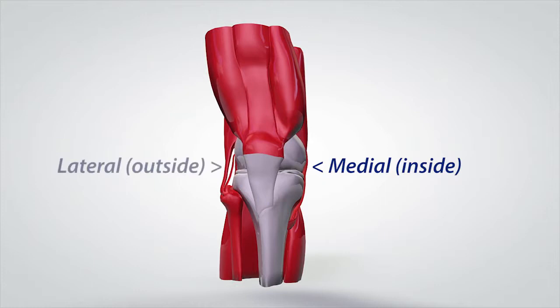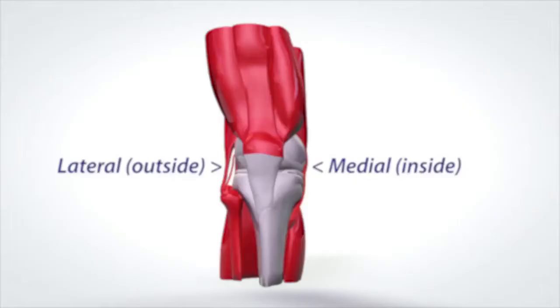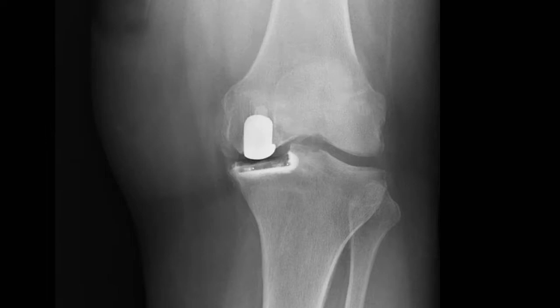The knee has two separate weight-bearing compartments: the medial or inside and the lateral or outside. Often when a patient has osteoarthritis or their knee is worn out bone against bone, it's only on one of those two sides. If that's the case, very often a partial knee will suffice as opposed to a total knee replacement.